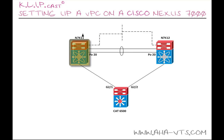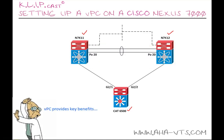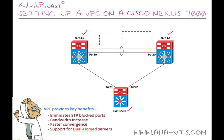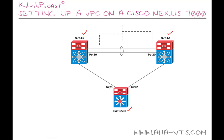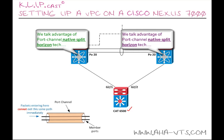In our case, our two physical Nexus 7000 chassis will appear to our downstream device, our Catalyst 6500, logically speaking, as one chassis. VPC provides some key technical benefits: it eliminates blocked ports found in traditional spanning tree topologies, increases available bandwidth, enables faster convergence in the event of a link or device failure, and allows dual-homed servers to operate in an active-active mode. VPC also leverages native split-horizon loop management provided by port channeling technology, meaning a packet entering a port channel cannot egress that same port channel immediately.